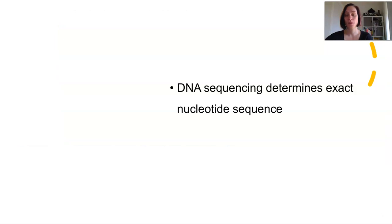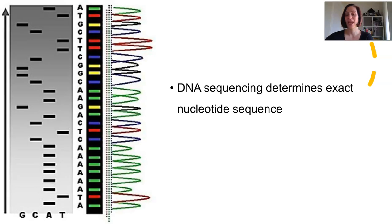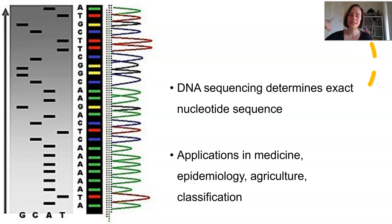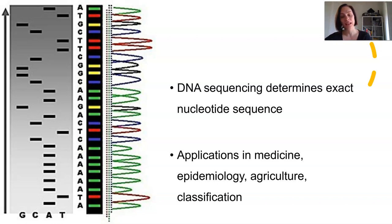DNA sequencing is the process of determining the exact nucleotide sequence of a piece of DNA. The sequences can tell us where genes are, if they're different from someone else's, what normal variation is, and what pathological variation is. Even single nucleotide variations can lead to huge changes, as we know from mutations. Sequencing is used substantially in medicine and epidemiology — for example, tracking strains of viruses — but also in agricultural fields of study, innovation, cladistics, and phylogenetics.